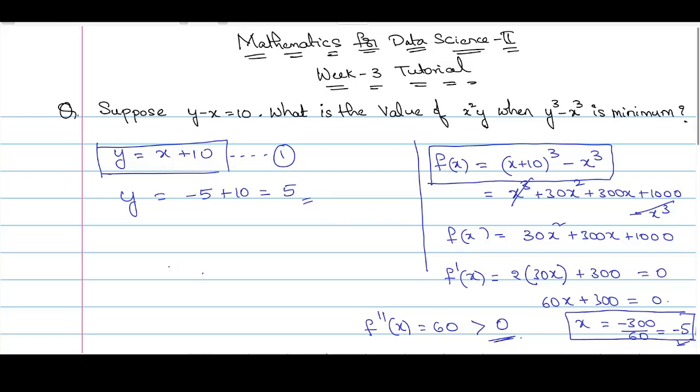Then we can compute the value of x square y. Therefore, x square y will be minus 5 square and y is 5. This will be 25 times 5, which is 125.